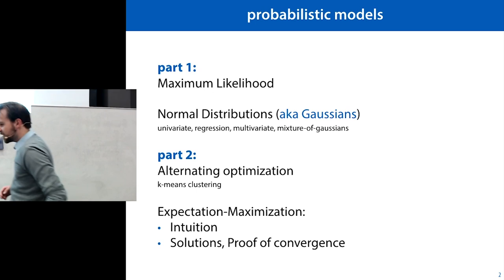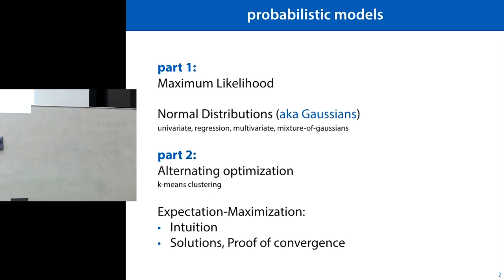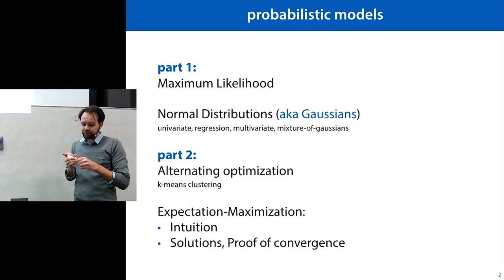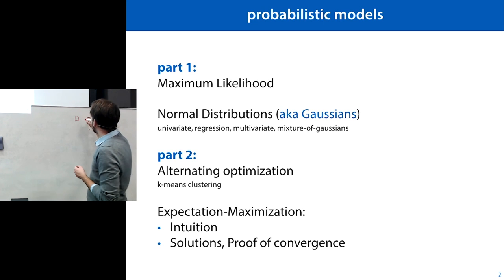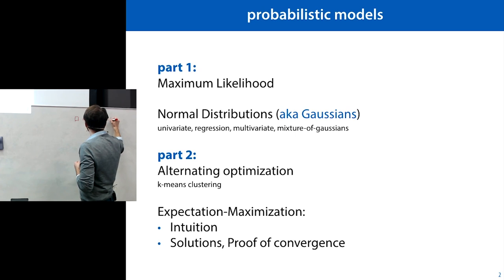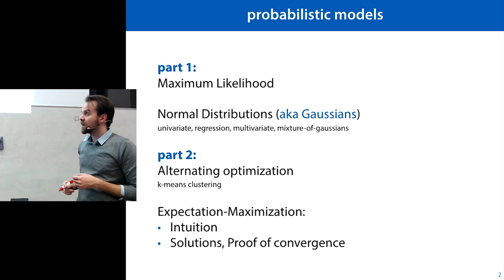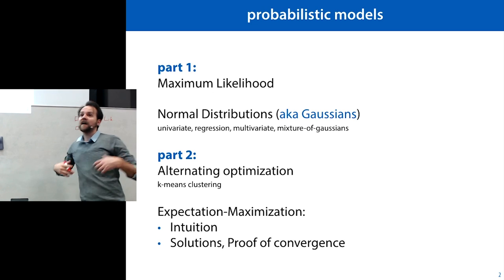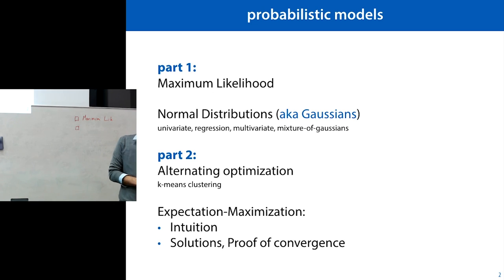In order to do that we need to develop a couple of tools. First is maximum likelihood. We've seen this before in the previous probability lecture, but we'll look at it in a little bit more detail and more slowly so that we really understand what's going on. Then we'll develop maximum likelihood further.